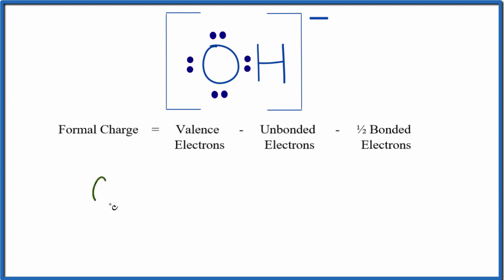So for oxygen, oxygen is in group 16, sometimes called 6A. It has six valence electrons. From that, we'll subtract the unbonded valence electrons. These are the ones not involved in chemical bonds. We have two, four, six of those.